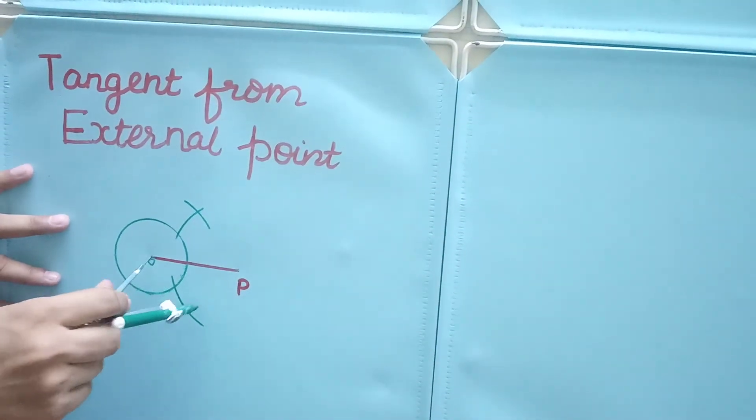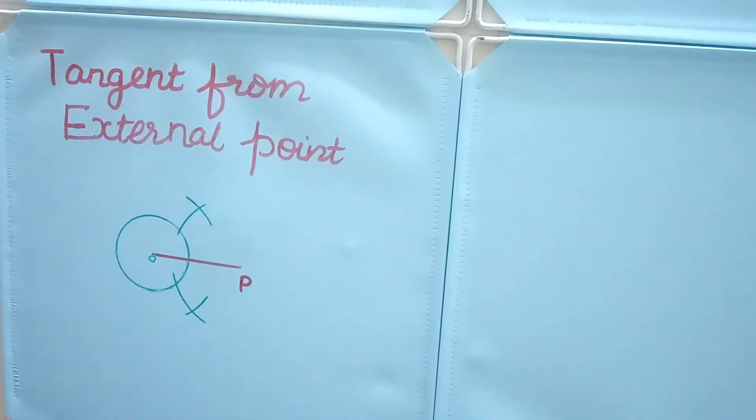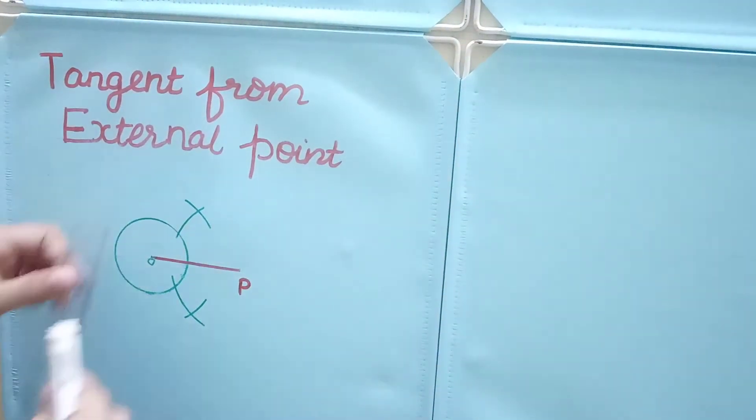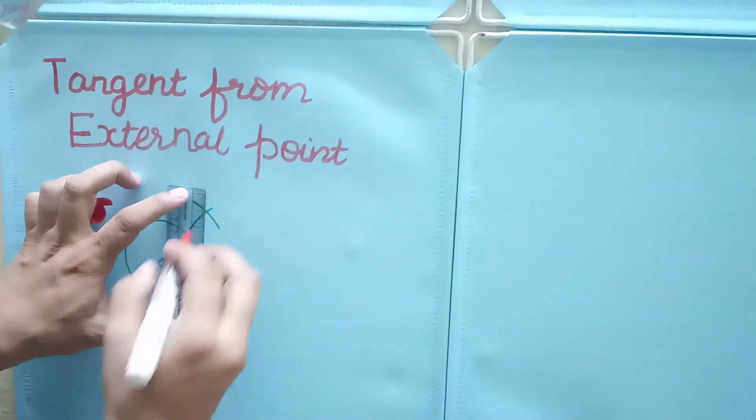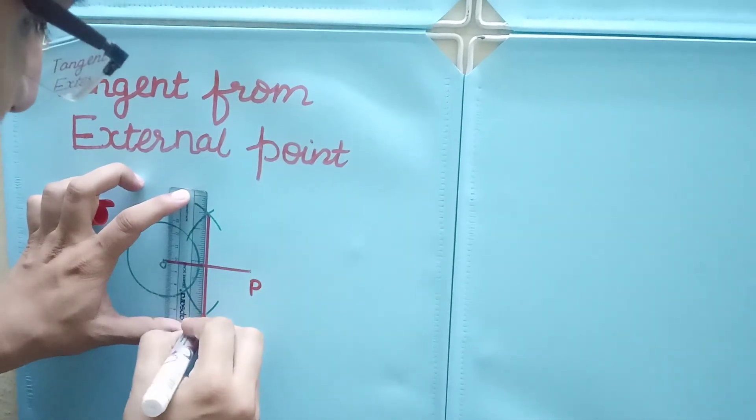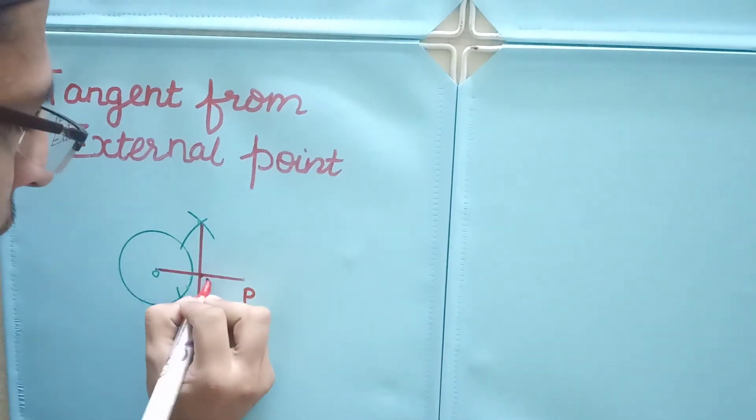The perpendicular bisector on OP will cut the line OP at point M. Like this, this point will be M.